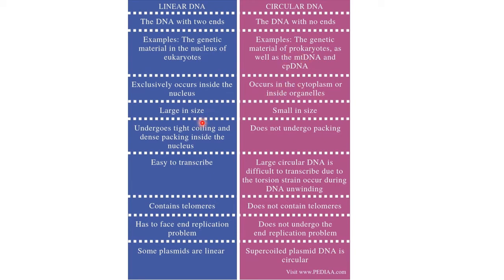Linear DNA is large in size, whereas circular DNA is small in size. Linear DNA undergoes tight coiling and dense packing inside the nucleus, as it has to fit within the nucleus. Circular DNA does not undergo any such packing.